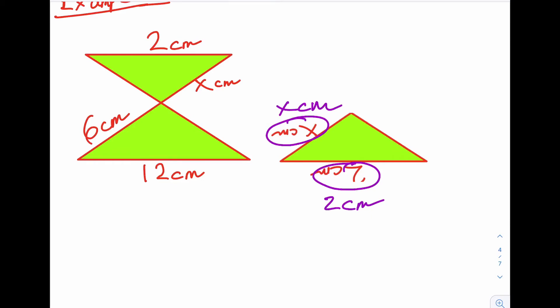So we're looking for a reduction scale factor, 2 over 12, which is a sixth. So that means that X must be a sixth of the same side, which is 6 here, which is 1 centimeter. So this X here equals 1 centimeter.